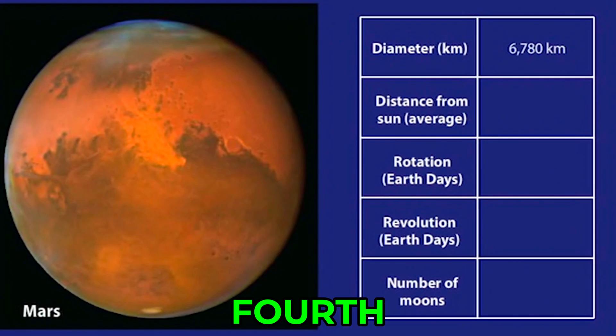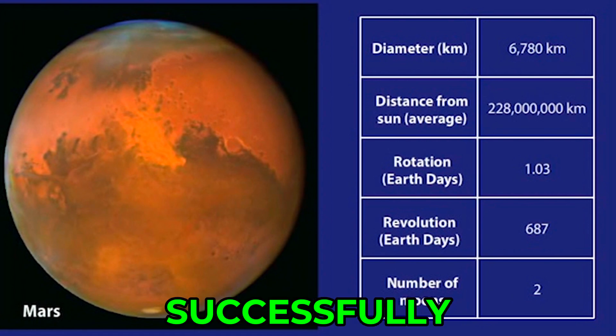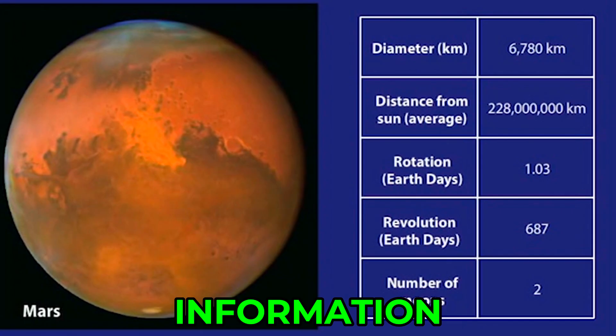Mars, the fourth planet from the Sun, has two moons. A day on Mars is slightly longer than a day on Earth, and it takes about 687 days for Mars to revolve once around the Sun. Space probes and rovers have successfully gathered much information about Mars.